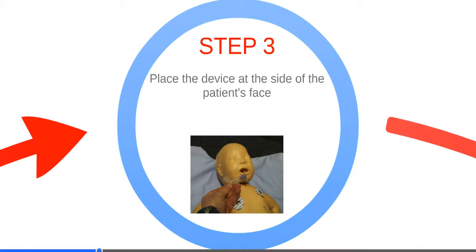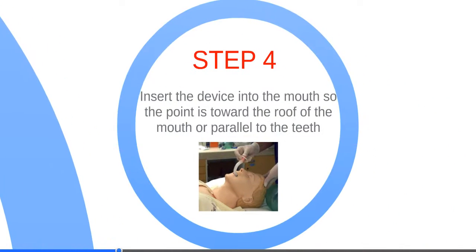Step 3: Place the device at the side of the patient's face. You'll want to choose a device that extends from the corner of the mouth to the earlobe. Next, insert the device into the mouth so that the point is toward the roof of the mouth and parallel to the teeth.